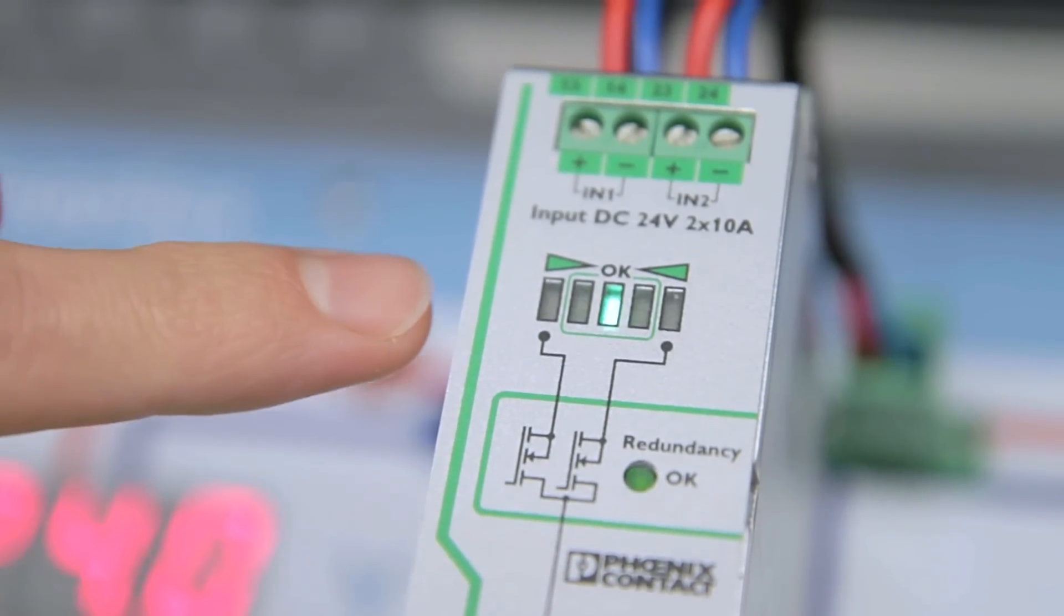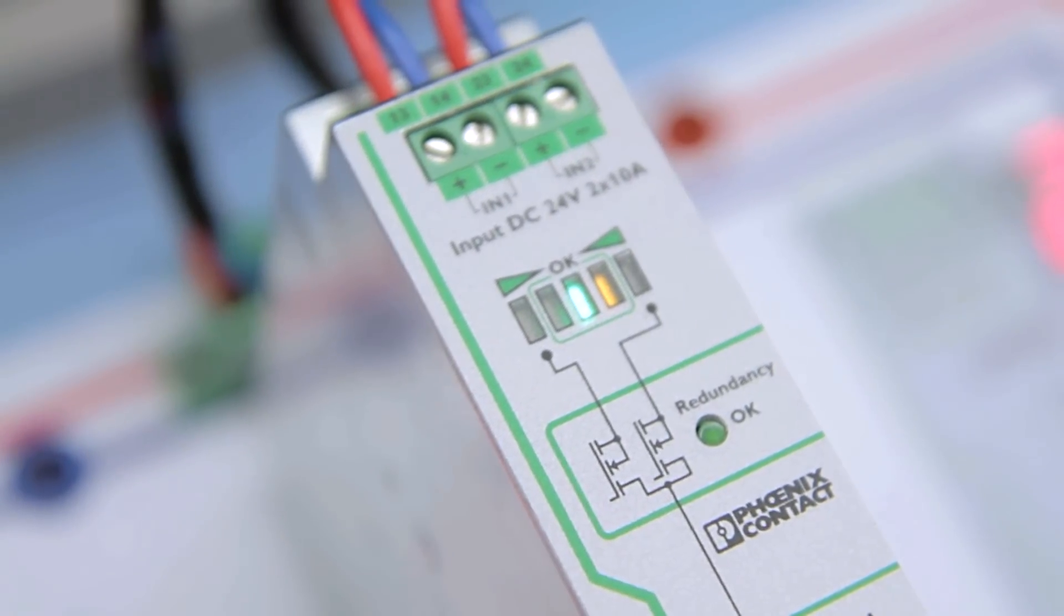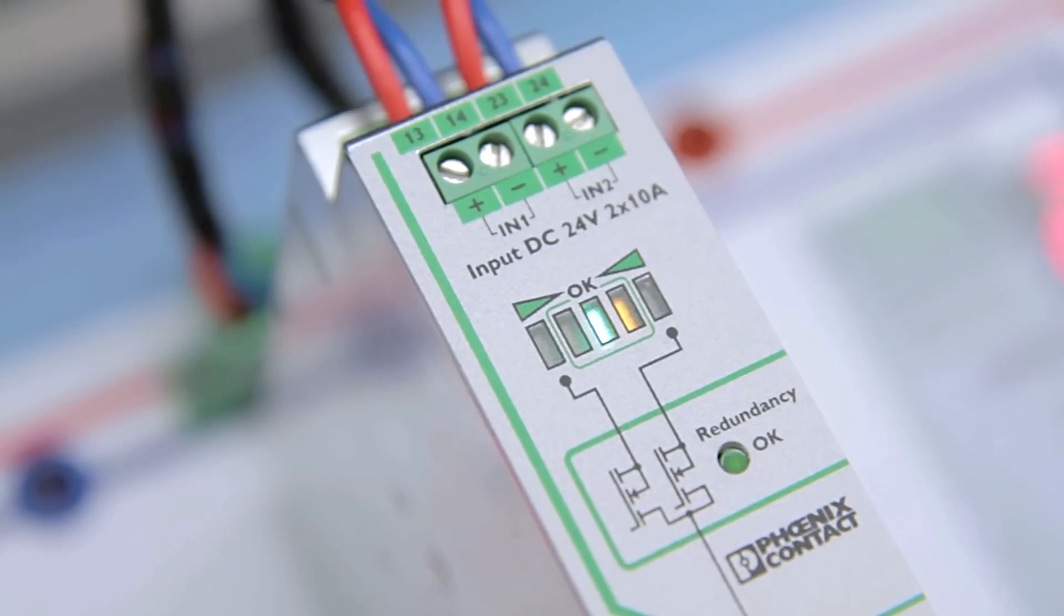Even load sharing is indicated on the display by a green light. When the voltage of the power supplies start to drift, the O-Ring module will keep the current balanced. However, a yellow indicator will show that the redundant power supplies are no longer adjusted properly.